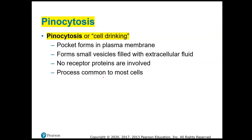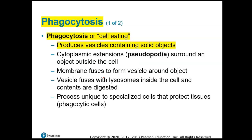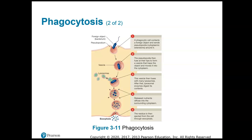Pinocytosis is cell drinking — the plasma membrane forms a pocket called a vesicle around a solution rather than a solid. Phagocytosis is cell eating. Here is an example of a white blood cell of our immune system engulfing a bacterial cell. A lysosome fuses with the vesicle containing the bacterium, breaking down and killing it.